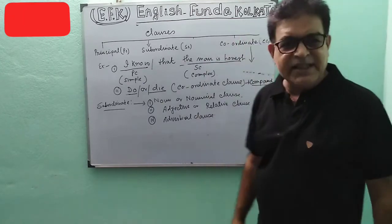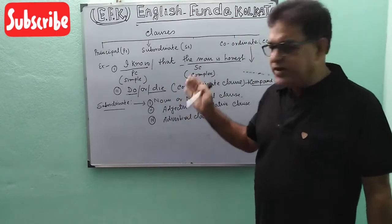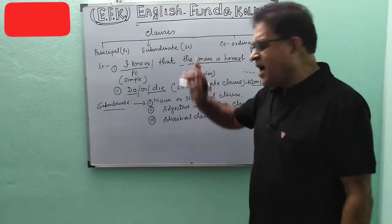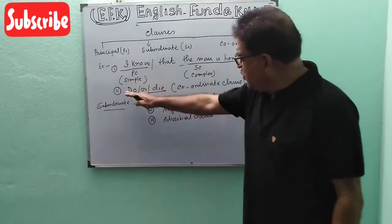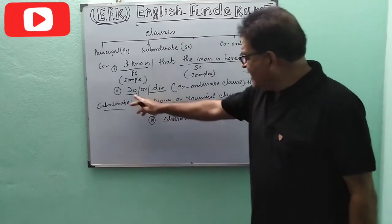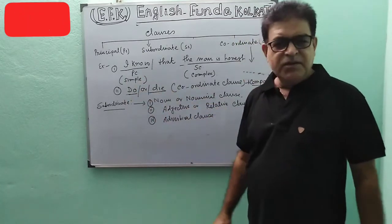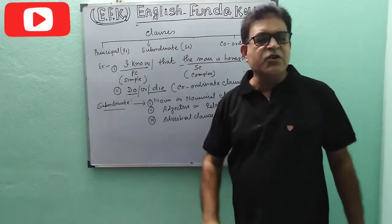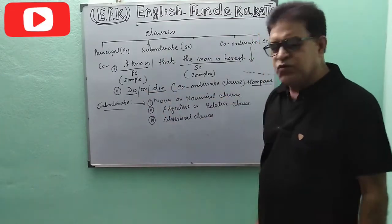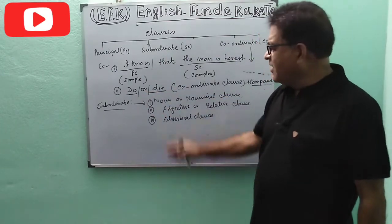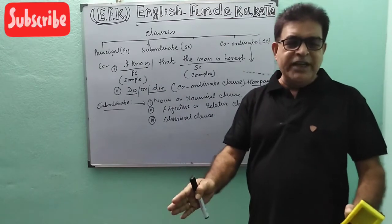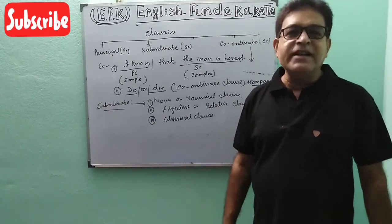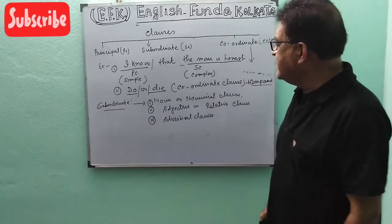Another type is the Co-ordinate Clause. I have told you about it. Take an example: 'Do or die.' Here 'do' and 'die' are two independent clauses linked with a coordinating conjunction 'or'. When two independent clauses are linked with a coordinating conjunction, this is called a Co-ordinate Clause.